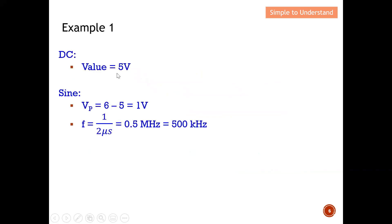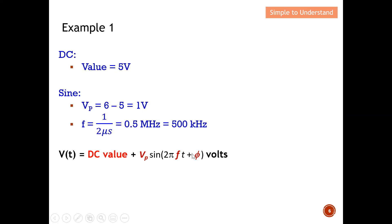With this information — DC term, Vp, and frequency — I can construct the equation using the general form. The DC value is 5, Vp is 1 (so I don't need to write the coefficient), the frequency is 500 kHz, and the phase is zero since there is no phase shift. The equation becomes: 5 + sin(2π × 500kHz × t). This successfully transforms the time domain signal into a mathematical expression.